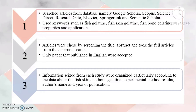For study selection, articles were chosen by screening the title and abstract, then taking the full articles from the database search. Only papers published in English were accepted. For data organisation and reporting, information from each study was organised according to data about fish skin and bone gelatin.